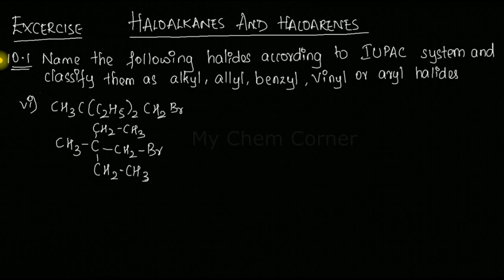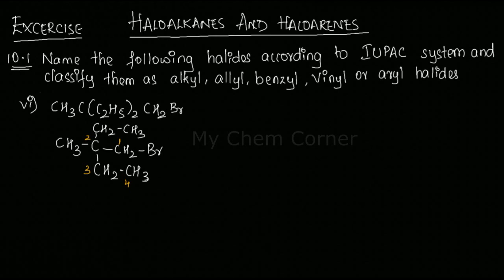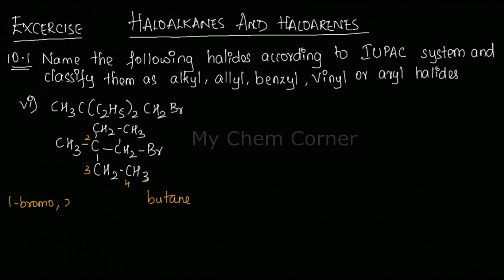For naming this compound, we start from the carbon with the functional group. Numbering carbon one and two, we look for the longest chain — either top or bottom — which gives us a four-carbon chain. So the parent hydrocarbon is butane. At position one we have a bromo group; at position two we have a methyl group and an ethyl group. In alphabetical order: 1-bromo-2-ethyl-2-methylbutane.